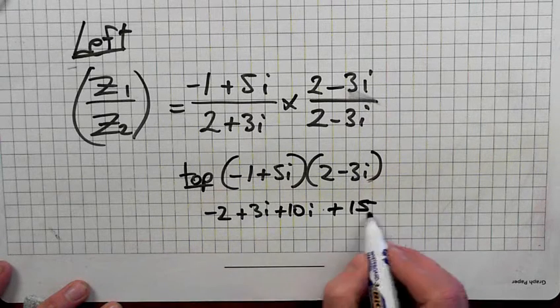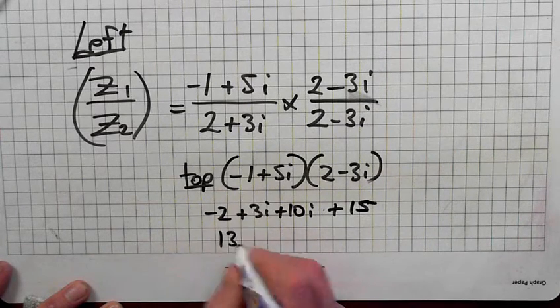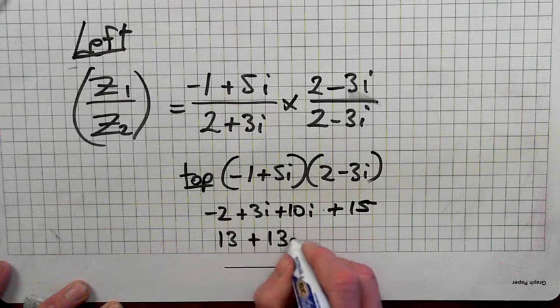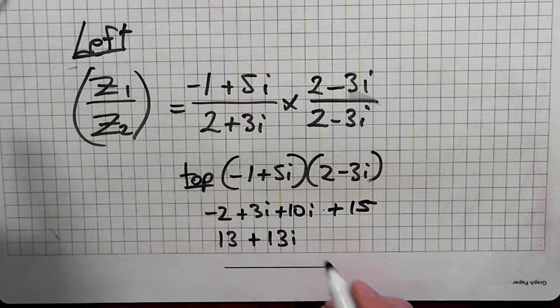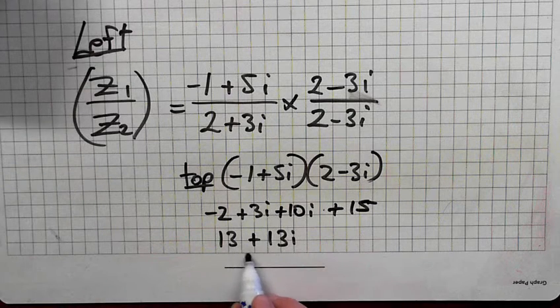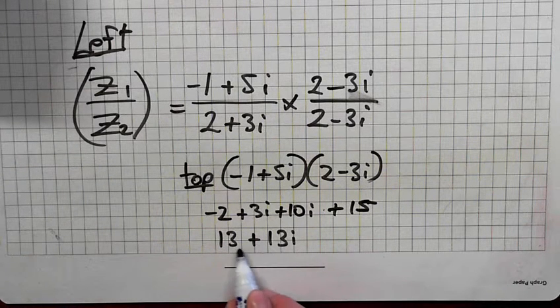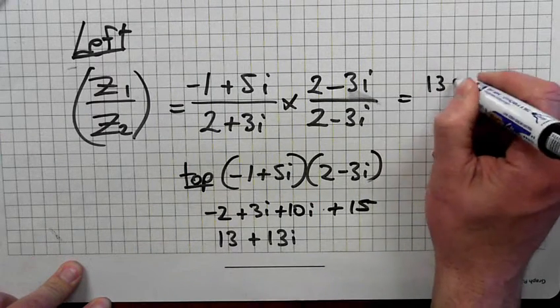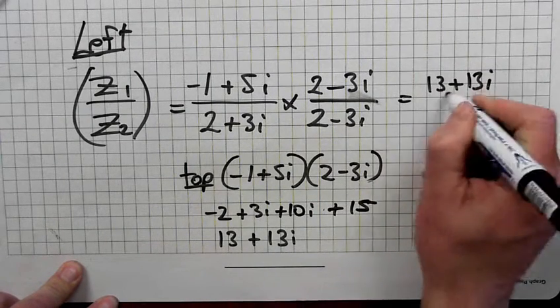15 minus 2? 13. 3 plus 10? 13. So the response is 13 plus 13i. That's on top.